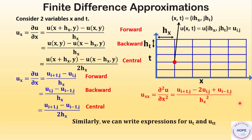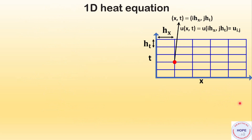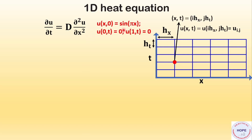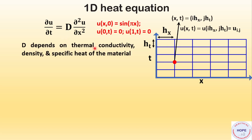Similarly we can write expressions for u_t and u_tt. Now let's take an example of a heat equation: del u by del t equals capital D times del² u by del x². These are the initial and boundary conditions. We know the value of u at t equals zero for all values of x, and also the value of u at the initial and final values of x — that is, 0 and 1 — for all time. D depends on thermal conductivity, density, and specific heat of the material.